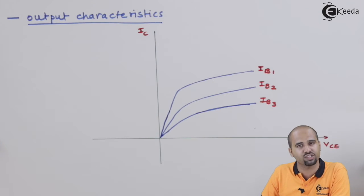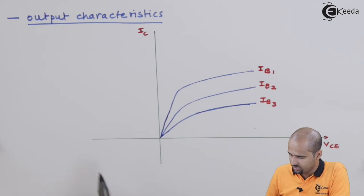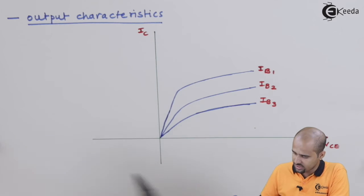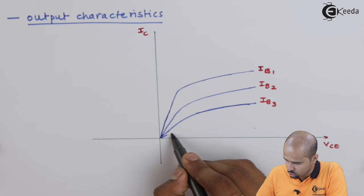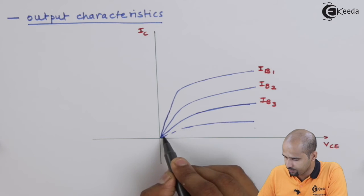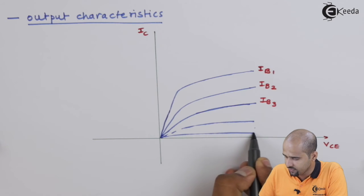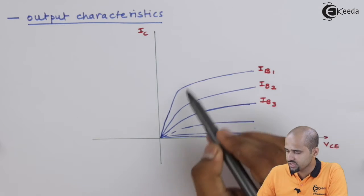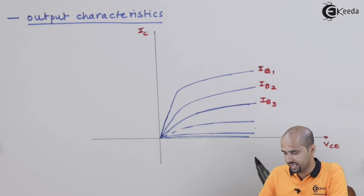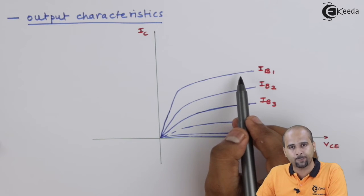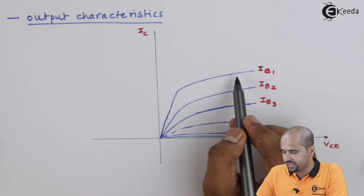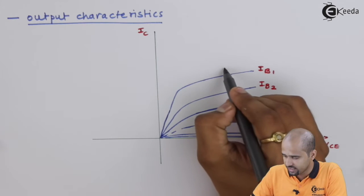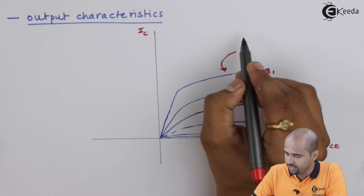These complete output characteristics of BJT are divided into three parts. For many values of Ib we get different curves. Looking at a particular region of the graph, the value of current is increasing linearly with voltage — that is why it is called the linear region.